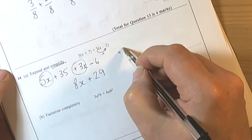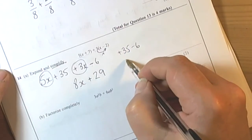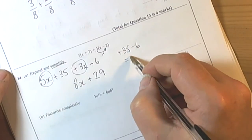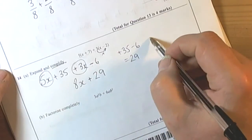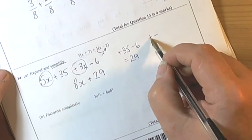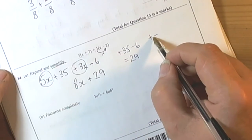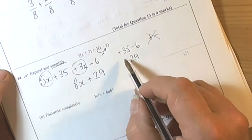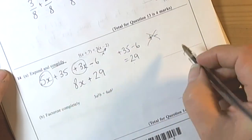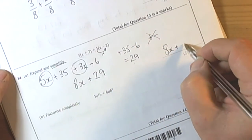You've got to be careful here, it's plus 35 take away 6, which is 35 take away 6 is 29. There's no negative here because you only change signs if the plus or minus are physically next to each other, so none of that is happening here. So it's positive 29, so the answer is 8x plus 29.